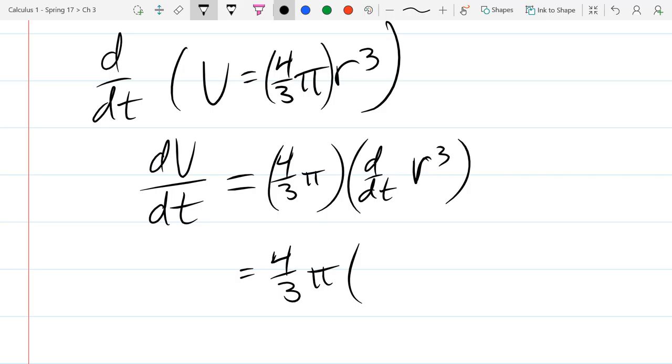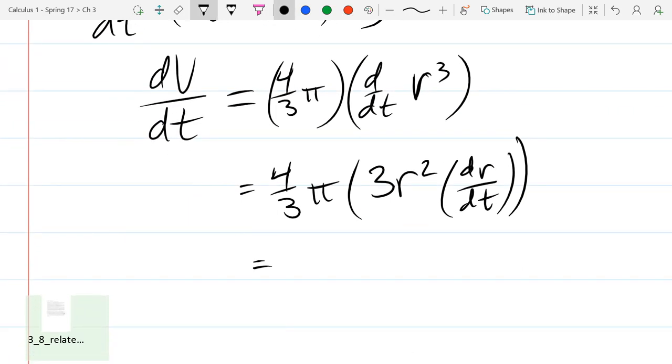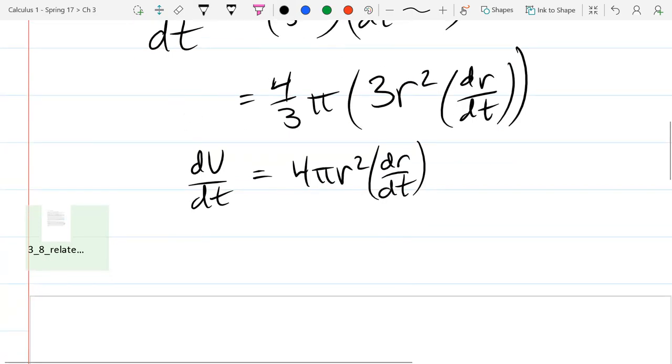So we definitely get 3 r squared. But what do I multiply this by? I can either write it as r prime or dr dt. So we took a t derivative of a function of r, so at the end we get times dr dt. And 3's cancel, we get 4 pi r squared dr dt.